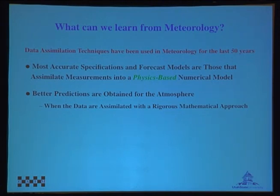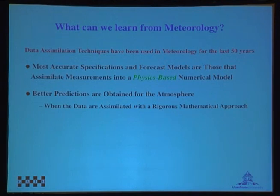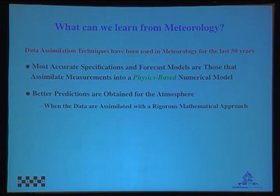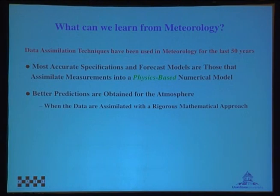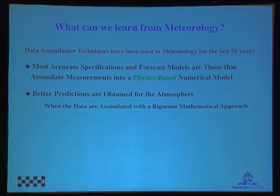What have we learned from meteorologists, who have 50 to 60 years of experience? They found that the most accurate specification and forecast models are those that assimilate measurements into a physics-based numerical model — you want physics built in, not just ad hoc approaches. They also found that better predictions are obtained when data are assimilated with a rigorous mathematical approach, not subjectively. Meteorologists initially started with subjective analysis and very soon learned that's not the way to go. There's control theory and real math behind this — it's not hand-waving voodoo.